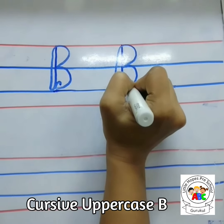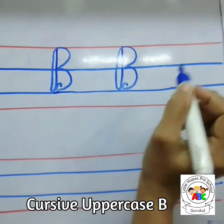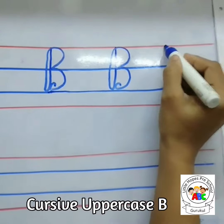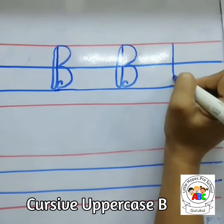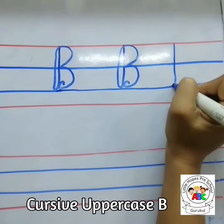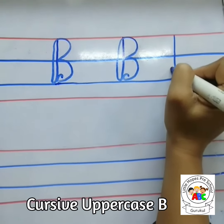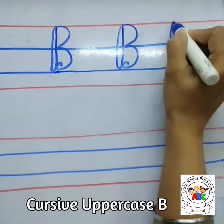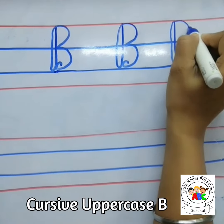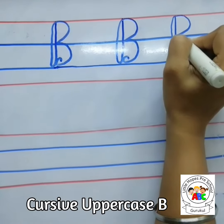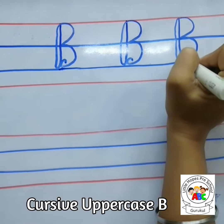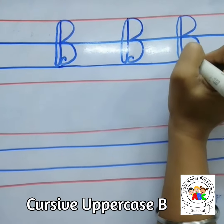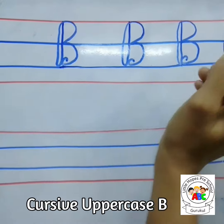The second curve we are ending it inside. A standing line, small curve, go up again, then a curve and the second curve is to be done inside.